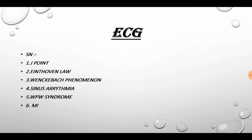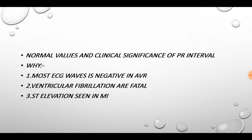Now moving on to the ECG chapter. The various questions asked from this chapter are: short note on the J-point, Einthoven's Law, Wenckebach's Phenomenon, Sinus Arrhythmia, Wolff-Parkinson Syndrome, and Myocardial Infarction — all these questions are important. Normal values and clinical significance of PR interval can be asked. Reasoning questions like why most ECG waves are negative in AVR is also important. Ventricular fibrillations are fatal is not that important. ST elevation seen in myocardial infarction is also important.